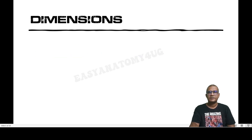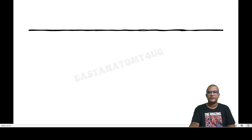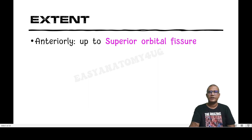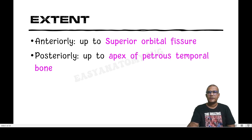The dimensions are 2 cm by 1 cm. The extent of the cavernous sinus is discussed anteriorly and posteriorly: anteriorly it extends up to the superior orbital fissure, and posteriorly it extends up to the apex of the petrous part of the temporal bone.